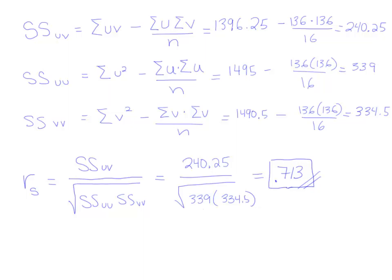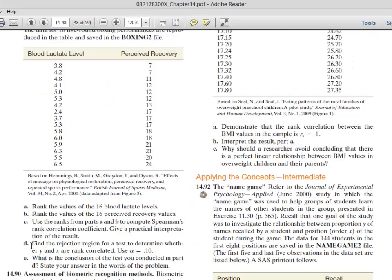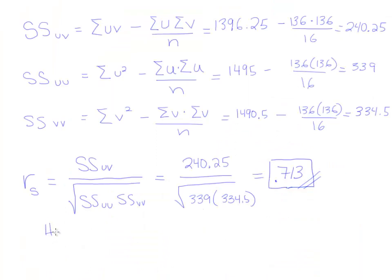Now for the hypothesis test. The question asks whether y and x are rank correlated, without specifying a direction. So the null hypothesis is that the population correlation coefficient equals 0 (no correlation), and the alternative hypothesis is that it does not equal 0. This is a two-tailed test. The alpha given is 0.10, but since it's two-tailed we use alpha divided by 2, which is 0.05.